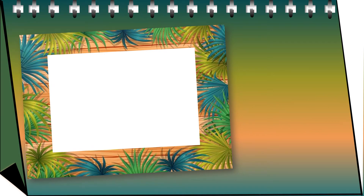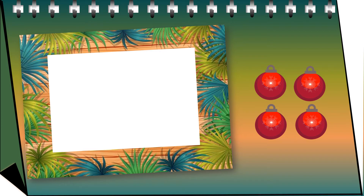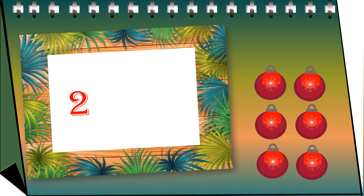Now we have four balls with us. Once again when you add two balls, it becomes six balls — that is two threes are six. So when you add two three times, it becomes six.